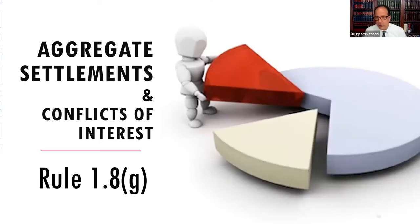This is a lecture for my professional responsibility class about ABA Model Rule 1.8G. In this video lecture, we're going to be talking about a very specific rule about making aggregate settlements on behalf of clients.